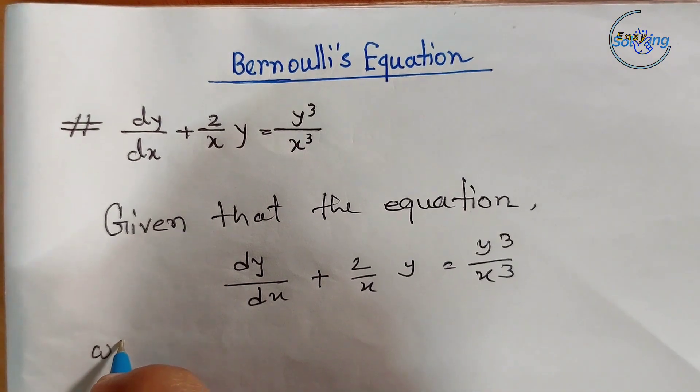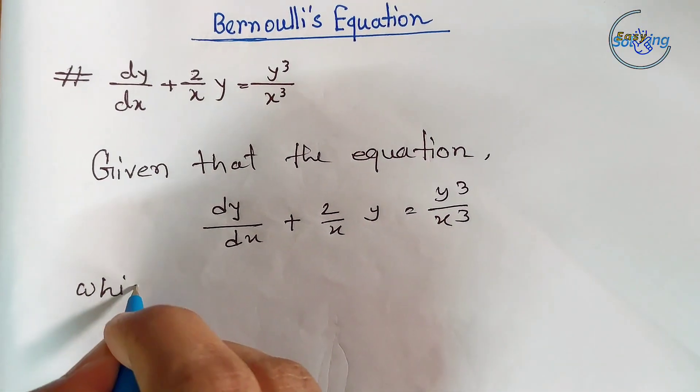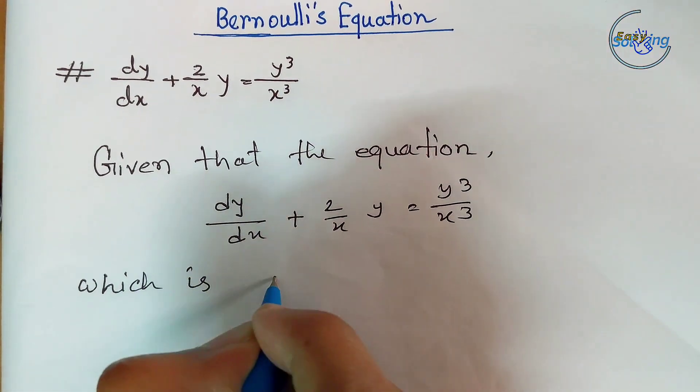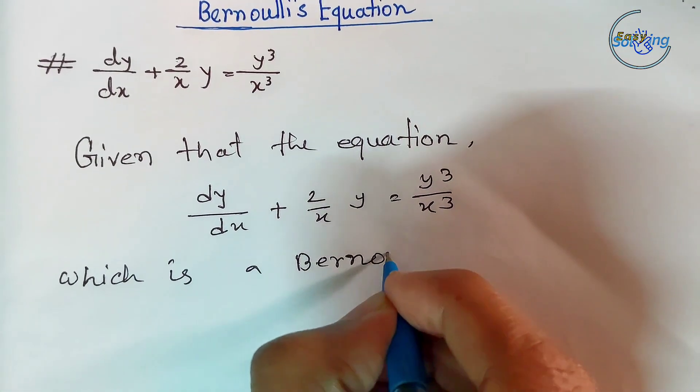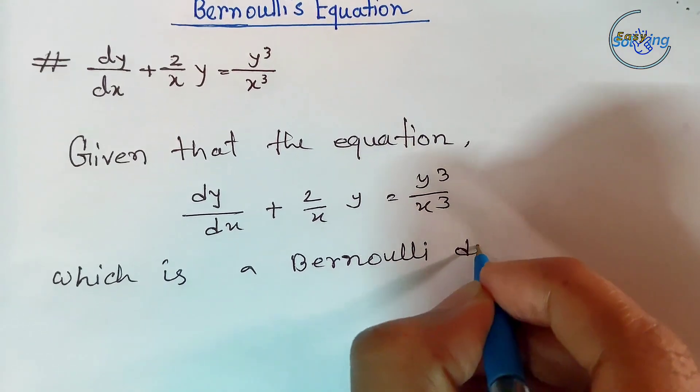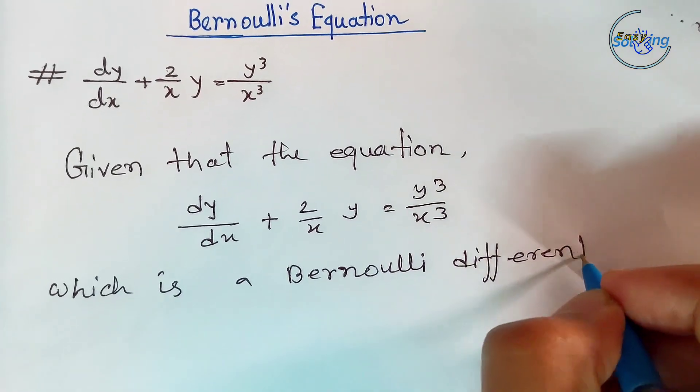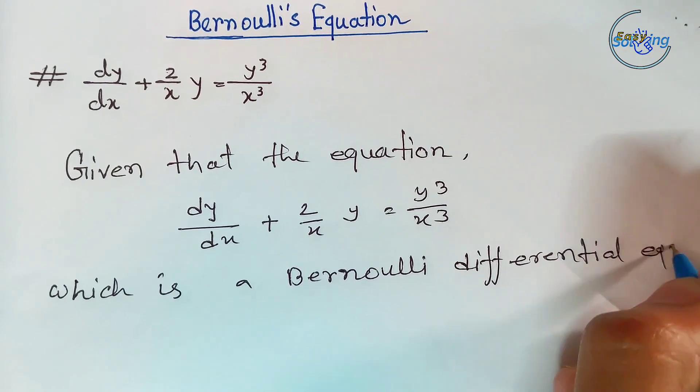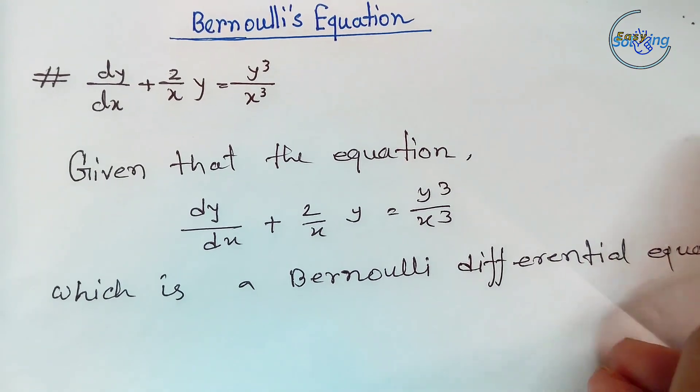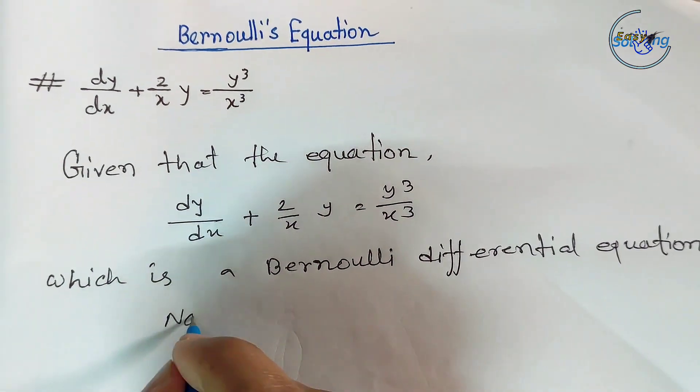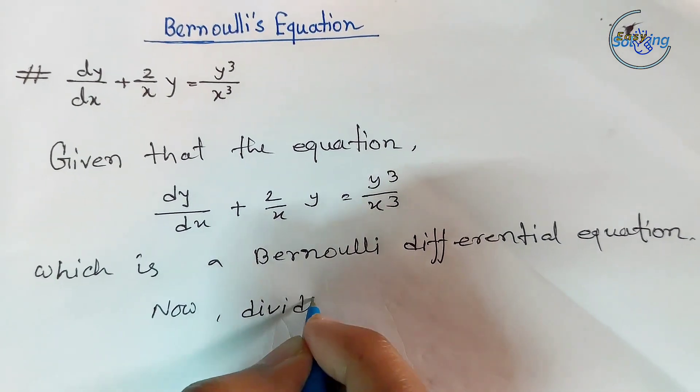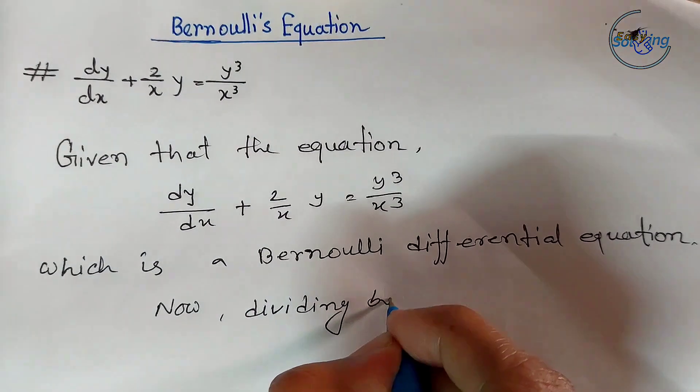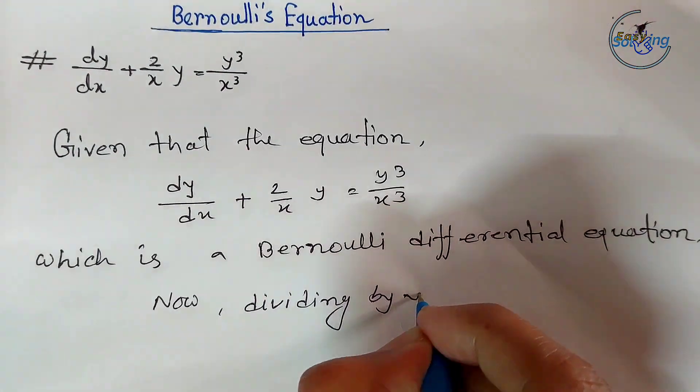The Bernoulli form is dy/dx + Py = Q·y^n. Now dividing by y³, we have